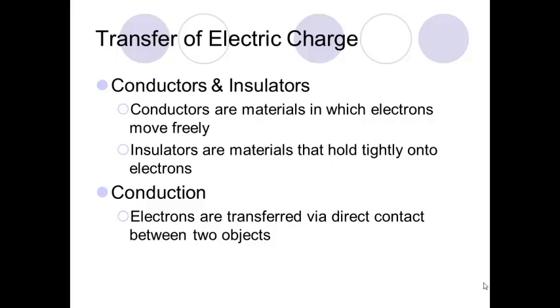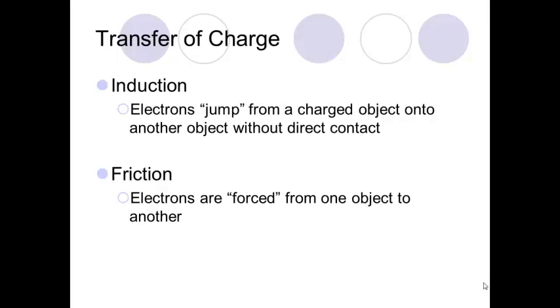In order for charge to be created, electrons must be transferred. There are three different ways charge is transferred. The first is conduction, where electrons are transferred via direct contact between two objects. The second is induction, where electrons jump from a charged object onto another object without direct contact. This happens when you shuffle your feet across a carpeted floor and get shocked before touching a door handle. Finally, friction is where electrons are forced from one object to another by rubbing, like shuffling your feet across carpet or rubbing a balloon against your hair.